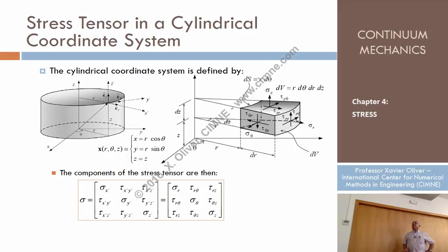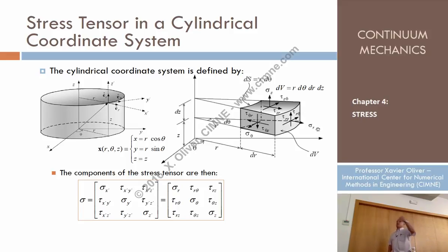Tau r-theta is that and tau r-theta is that. That vector is growing — that angle is growing in that sense. So the positive sense of theta is that, and the positive i-prime is that. In that sense it's positive; in that sense it's negative. In this hidden plane, the other side — because this is a hidden plane and this is a visible plane which corresponds to a normal corresponding to x-prime here — tau r-theta positive is in that sense, and tau r-theta positive is in that sense.